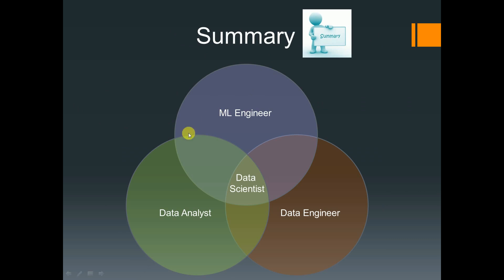You can see here there are different sections — machine learning engineer, data engineer, and data analyst — and the data scientist is the intersection of all three. It totally depends on company to company. If the company is very large, there are chances they will have different tracks for machine learning engineer, data engineer, and data analyst. In such companies a data scientist might be working as an ML engineer. And if you're working with a startup, you may have to do everything on your own, from data collection to model deployment.